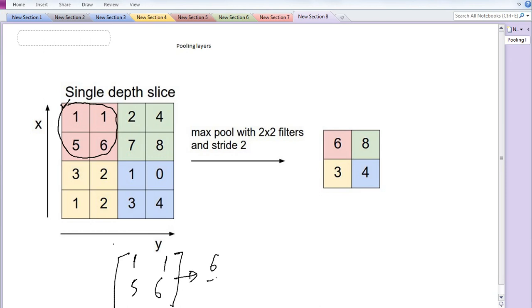Now you move two steps ahead on the right-hand side, so you come across this. If you find the maximum value out of [2, 7, 4, 8], it comes out to be 8.